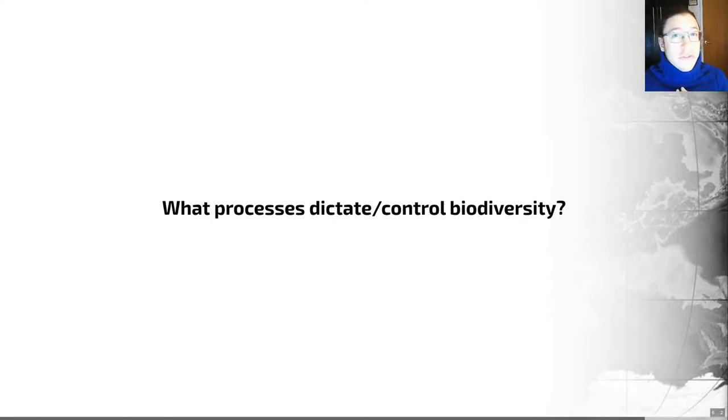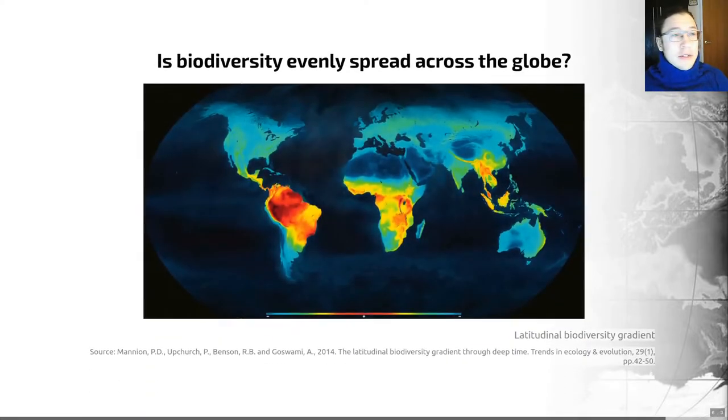I wanted to finish this lecture by essentially just skimming the surface of a single example to illustrate how complex these questions can be. And that simple example is a thing called the latitudinal biodiversity gradient. So I ask here, is biodiversity evenly spread across the globe? And the answer is no.